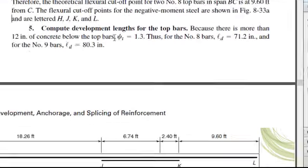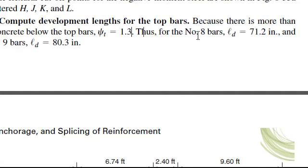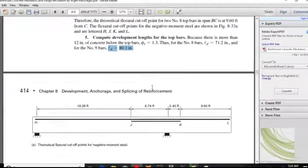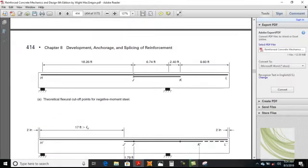For number 8 bar the development length is 71, and for number 9 bar it is 80.3. Only the case changes — top reinforcement versus bottom reinforcement in the positive region. Point J is the first theoretical cut-off point and lies at a distance of 18.26, and this theoretical point lies at a distance of 9.60. Now how much is this 2.4 feet distance?